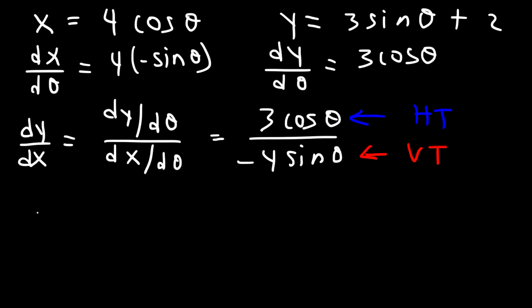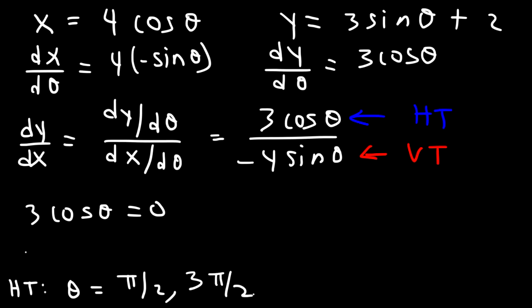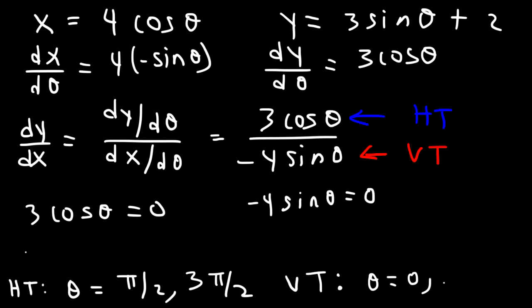Let's start with the numerator. When is cosine θ equal to zero? Focusing on the interval from 0 to 2π: cosine(π/2) is 0, and cosine(3π/2) is 0. So we have a horizontal tangent line when θ equals π/2 or 3π/2. For the vertical tangents, when is negative 4 sine θ equal to zero — or when is sine θ equal to zero? Sine(0) is 0 and sine(π) is 0. We don't need to include 2π because 0 and 2π give the same x and y values.